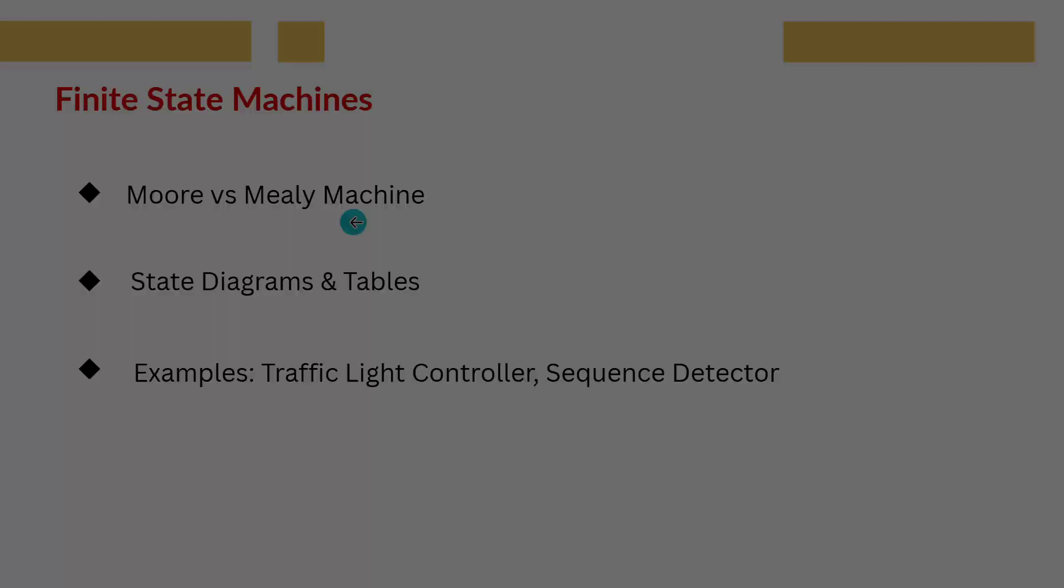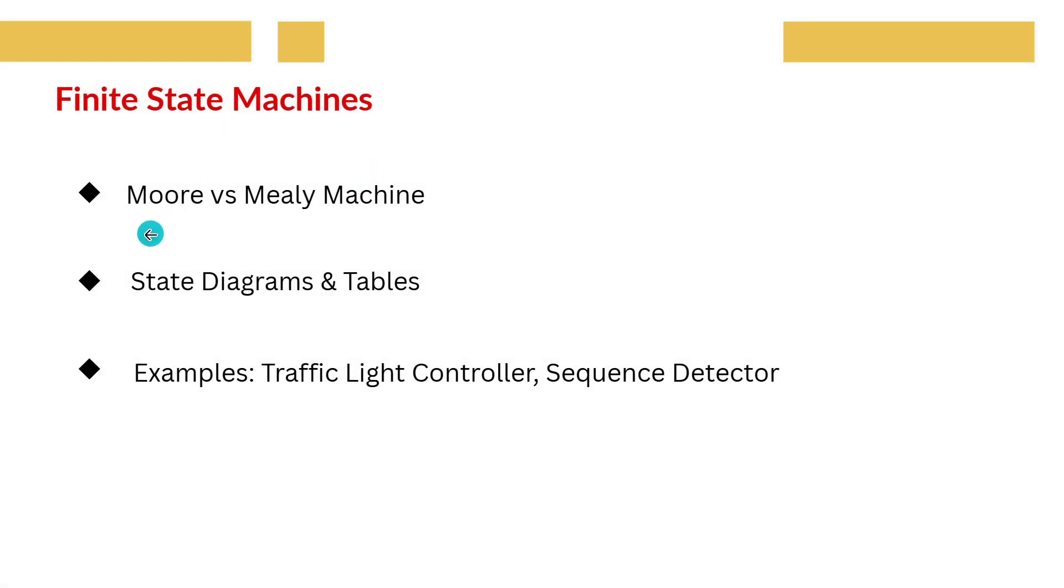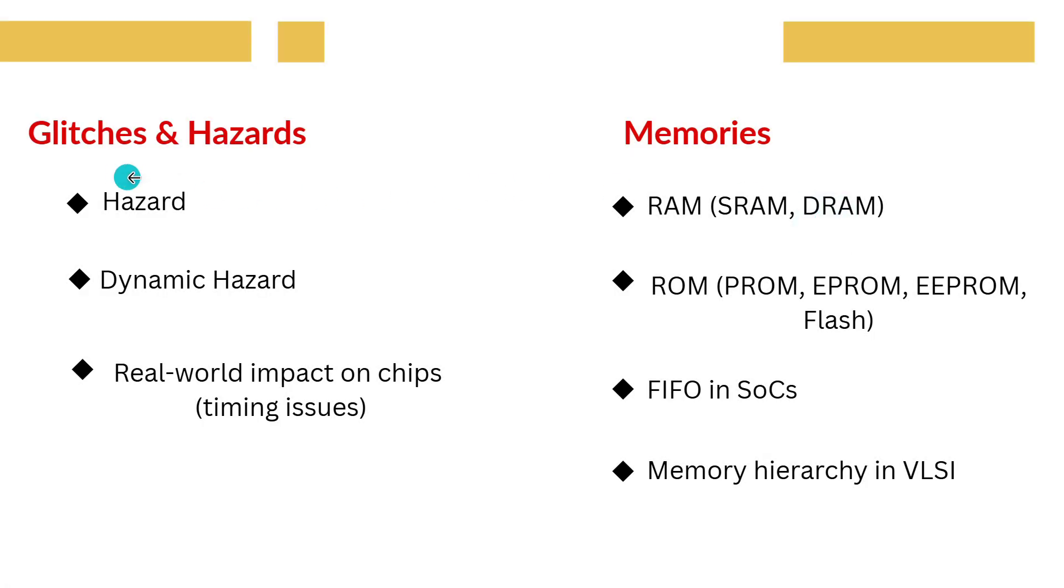FSM. Finite State Machines are one of the most important parts of VLSI design. They are used to design controllers like a traffic light controller or a sequence detector. There are two main types, Moore and Mealy. FSMs are everywhere inside digital chips.